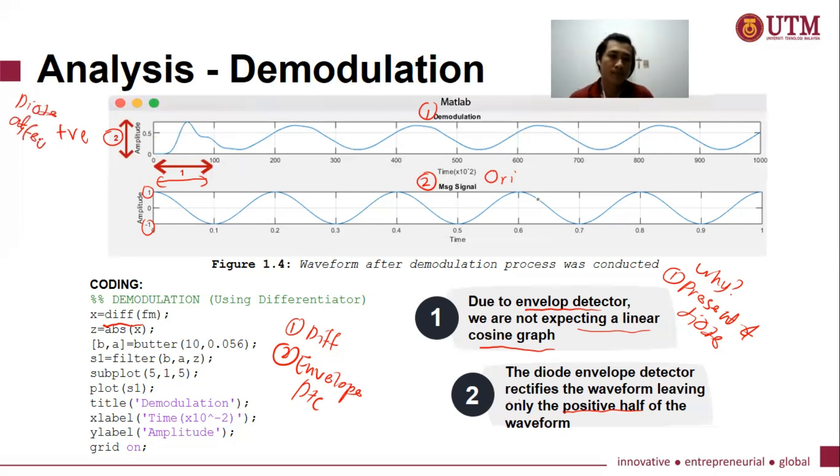However, the amplitude we are getting is zero and approaching to one, but it is not actual to one. Why does it happen like that? This is due to the losses due to the diode and the low pass filter. So because of that, we will have some disturbance from the frequency signal.